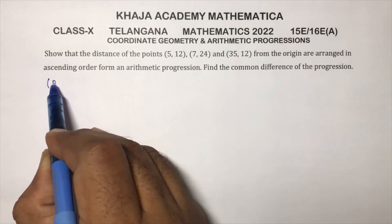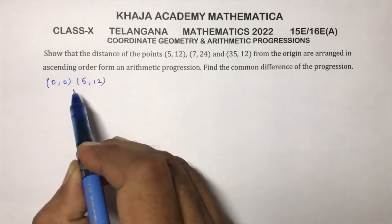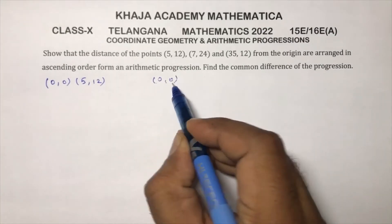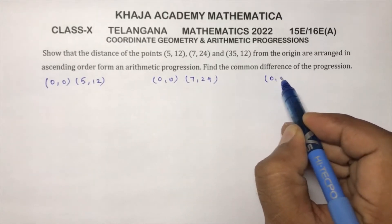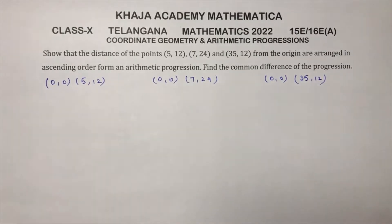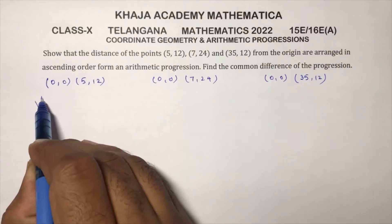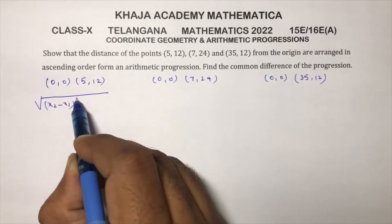First I will calculate distance from origin (0, 0) and (5, 12), then (0, 0) and (7, 24), then origin (0, 0) and (35, 12). So I will calculate the distance between origin and all these three points. Distance formula is under root (x2 minus x1) whole square plus (y2 minus y1) whole square.